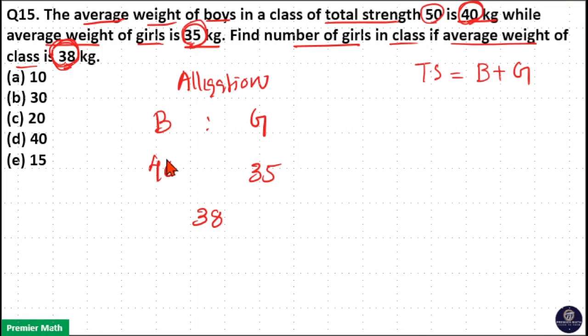Now, take the difference between 40 and 38 which is equal to 2. Write it in the bottom right corner. Now, take the difference between 38 and 35, write it in the bottom left corner, that is 3.